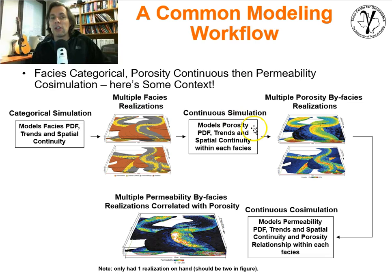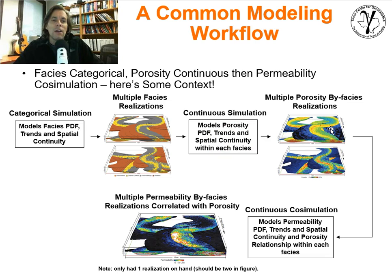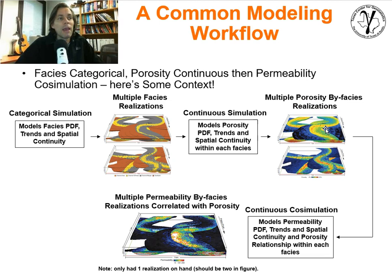Then within the facies, we will simulate using a continuous simulation method such as sequential Gaussian simulation. The porosity usually comes next — there could be other variables like shale fraction, but it's pretty common to go straight to porosity within facies. There might be trends, and you'll have information on spatial continuity. The trends might be very detailed, telling you about how porosity transitions or non-stationarities behave within the facies. For example, there's higher porosity — the hot colors — toward the center of channel objects, and lower porosity toward the edges.